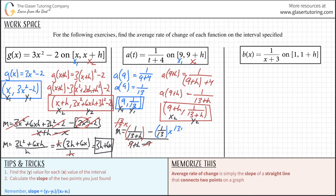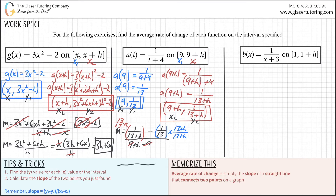We're going to multiply by 13+h over 13+h. So now we get 13 over 13(13+h), minus (13+h) over 13(13+h). They have a common denominator, so it's going to be 13 minus (13+h) in the numerator, all over 13(13+h), and this whole thing is still divided by h.